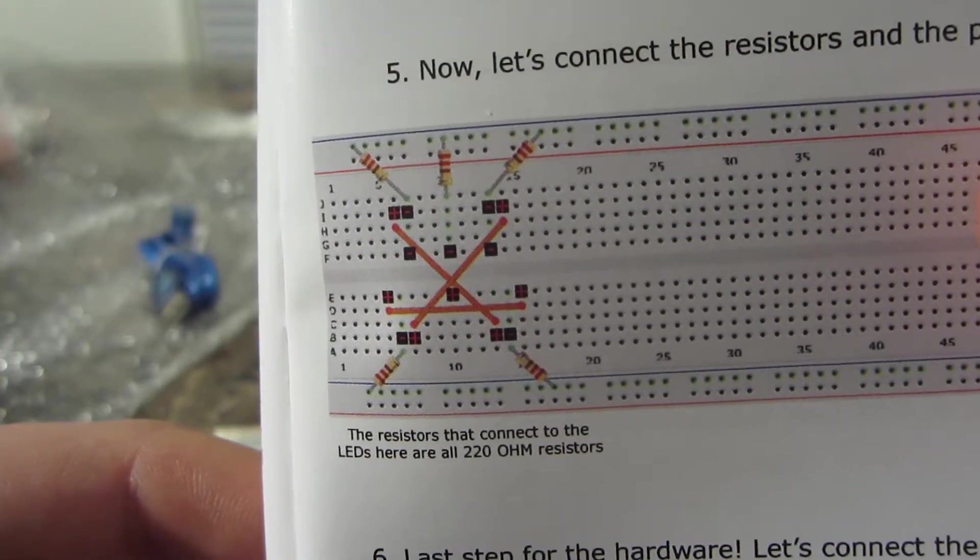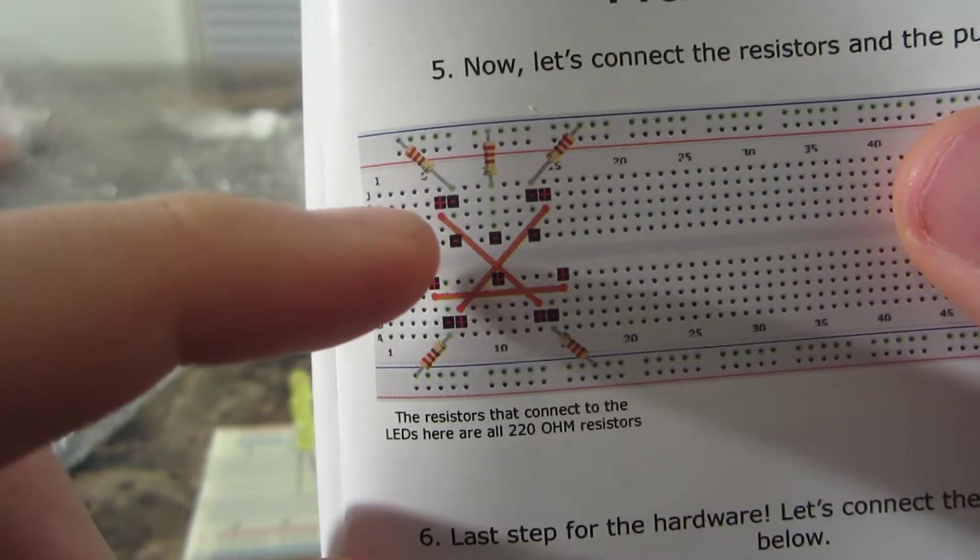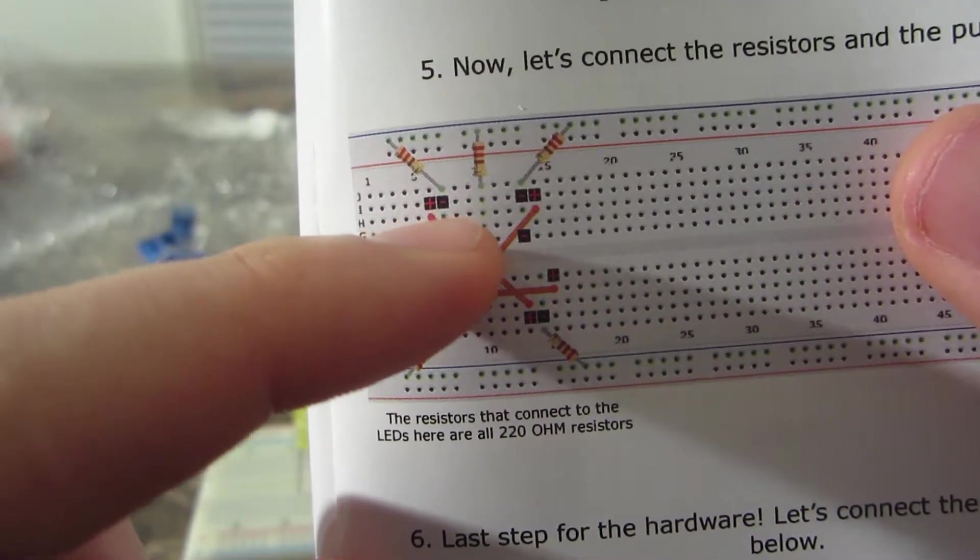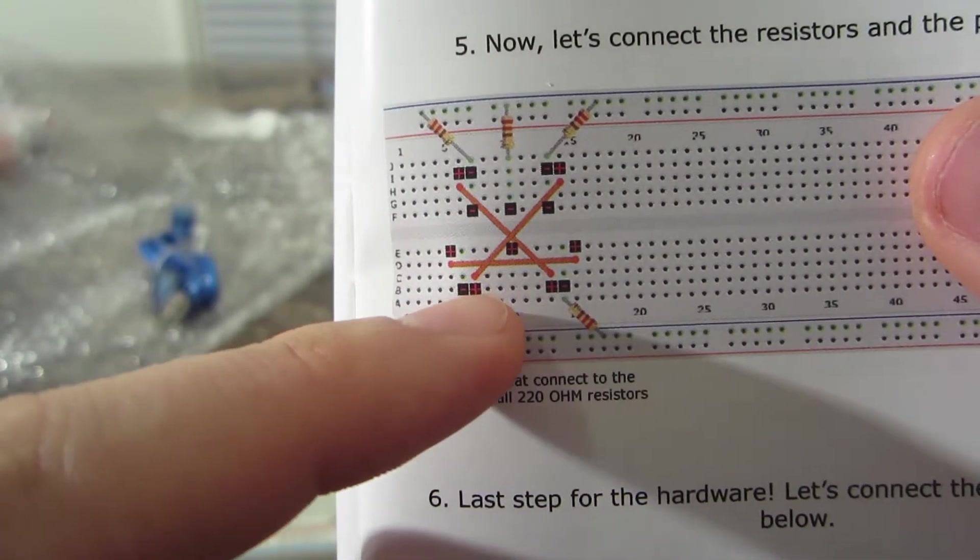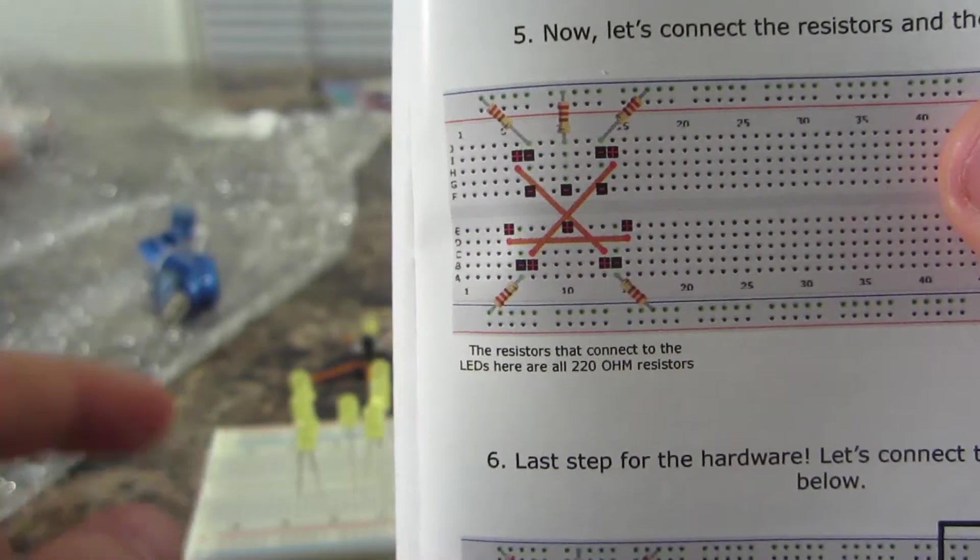Now before you get too far with your building, you will want to make sure that the positive and negative side of your LED corresponds correctly. The positive side is the longer side, so keep that in mind. I always bend the positive side outwards; that always helps me when it comes to remembering which is what.